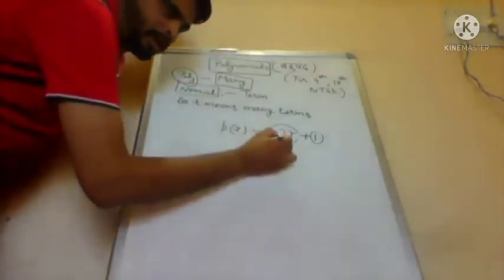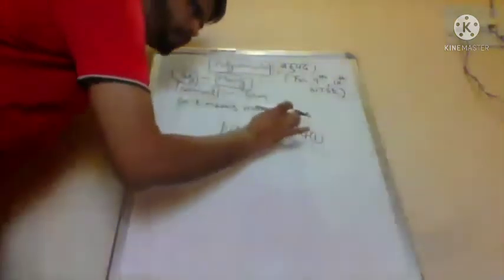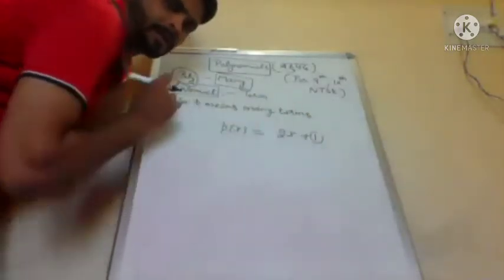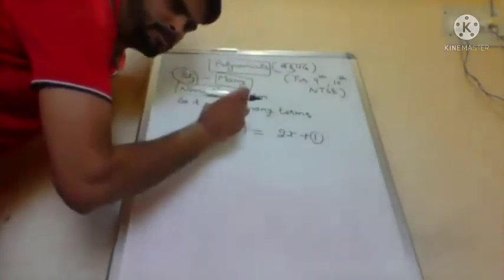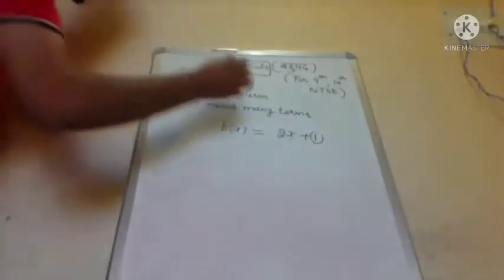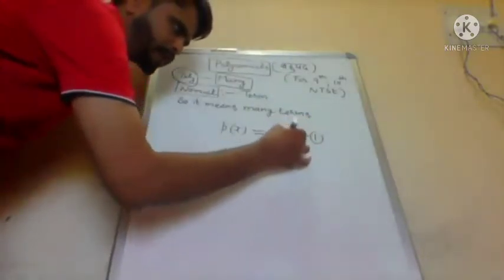Here, the numbers 2 and 1 are constants, and x is a variable. Jab bhi aap polynomial ke baare mein discuss karenge, to class 10 mein sabse pehle jo aayega, that is a linear polynomial — aisa polynomial jisme x ki highest power, yaani degree, one hogi. Yahan x ki power kya hai? One. So it is called a linear polynomial.